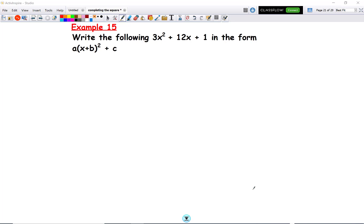In this video, we're going to look at completing the square when the coefficient in front of x² is greater than 1. We're going to write it out: 3x² + 12x + 1.